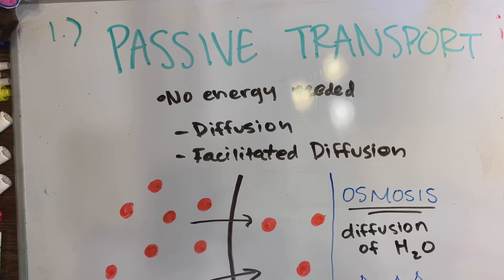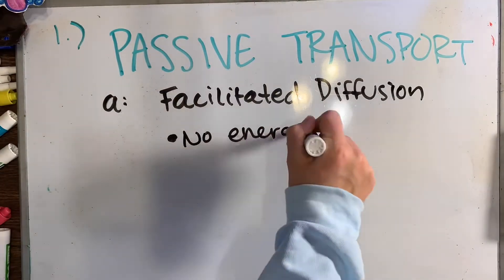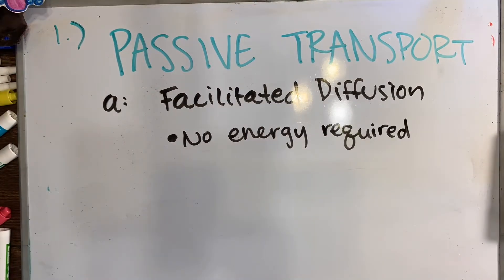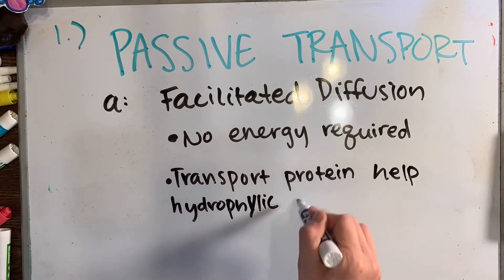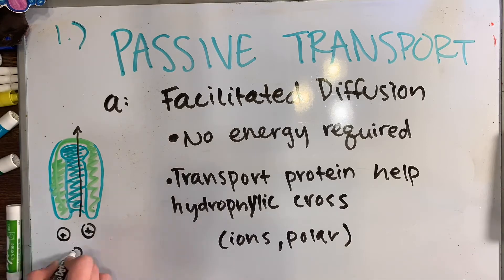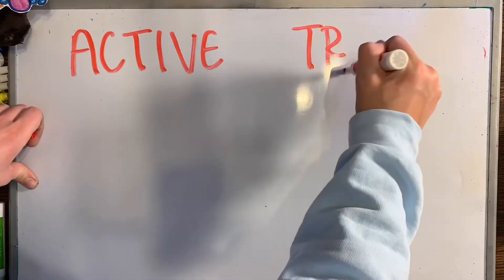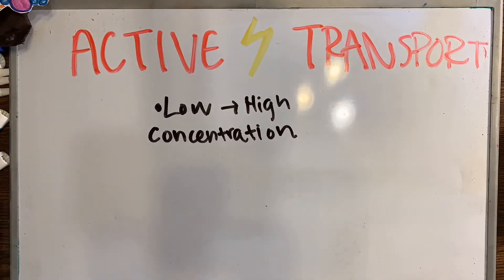Facilitated diffusion is still passive transport — no energy is required and molecules still follow the concentration gradient — but a transport protein helps hydrophilic substances like ions and polar molecules cross. A specific example of these are aquaporins, which allow the passage of water.